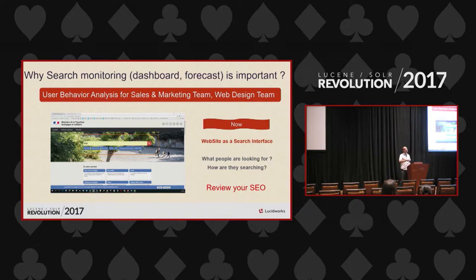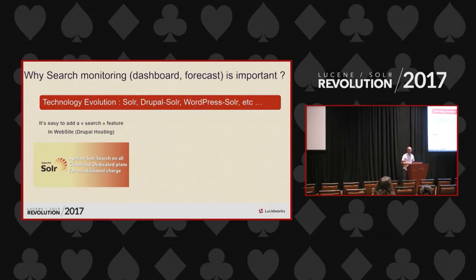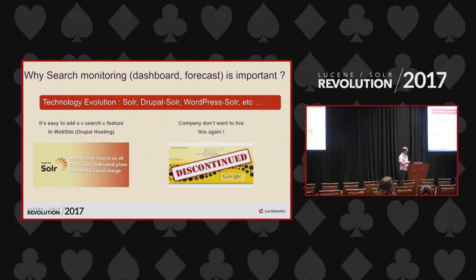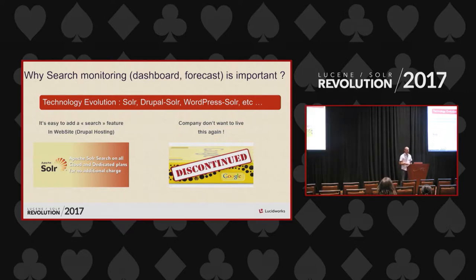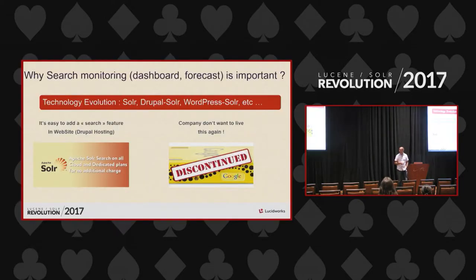You have search engine optimization — when people reach your website you've already attracted them from somewhere, maybe you bought Google ads. Also technology evolution: things like Solr — Drupal Solr, WordPress Solr, any CMS came with a small Solr embedded, very easy to deploy. And there are also hosted website solutions that people don't want anymore.